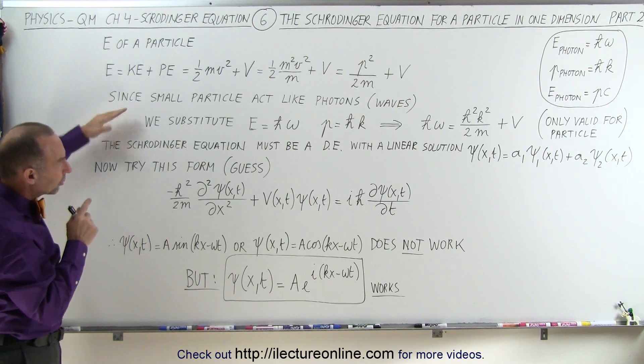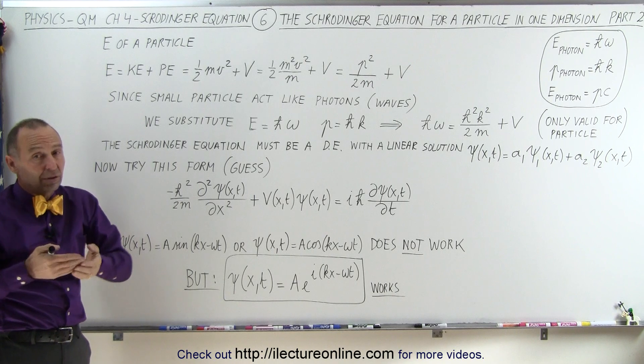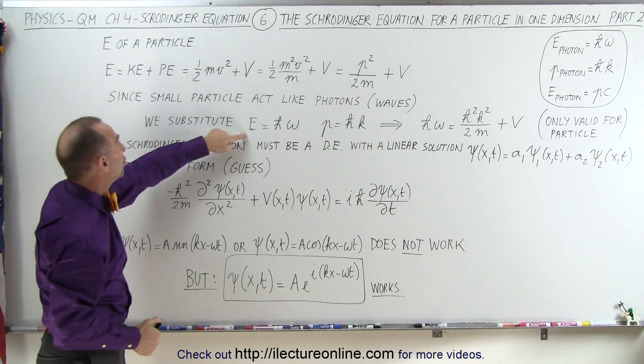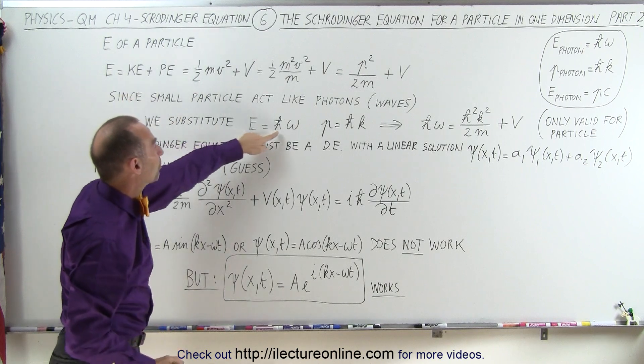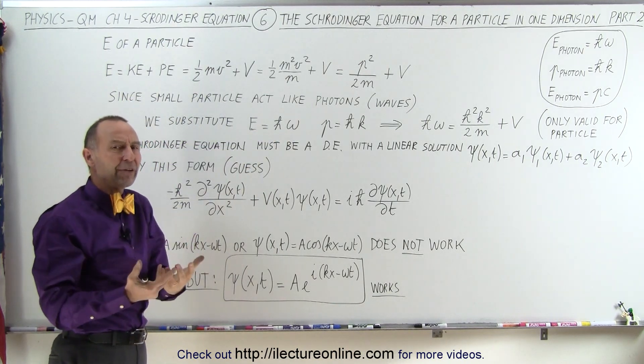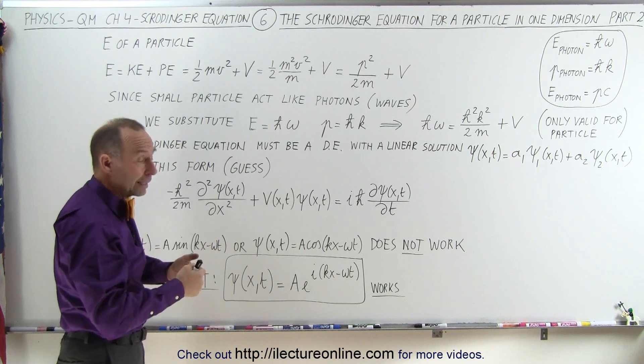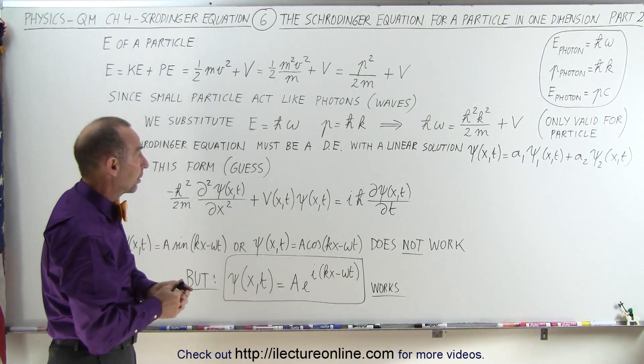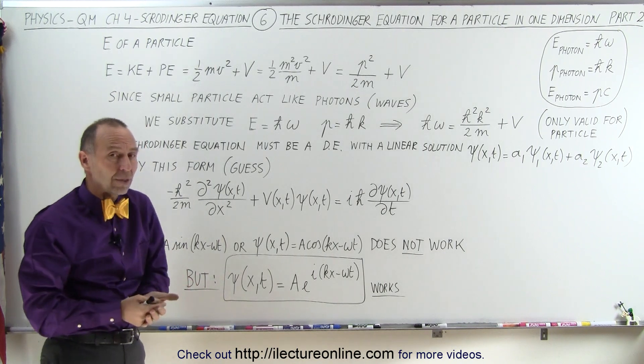Now, since small particles act like photons, and photons have waves, we can substitute the energy in this equation by h-bar omega. This is kind of a leap of faith, but that's what de Broglie did, and he came up with the correct equation describing the wave of a small particle like an electron. So we're doing the same thing here.